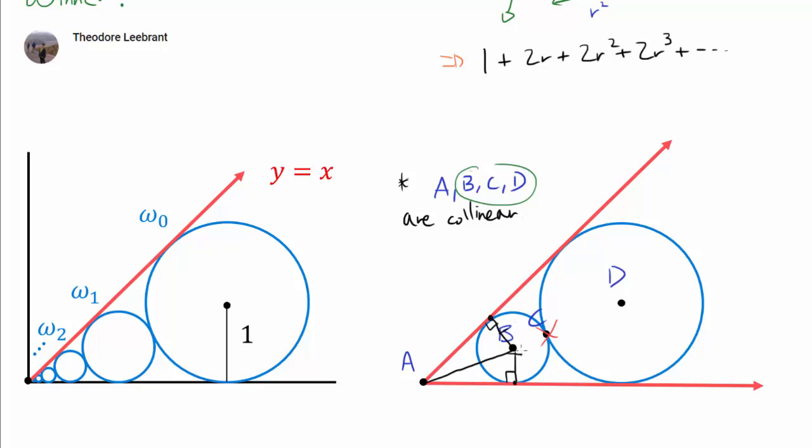We see that by hypotenuse leg, we know these two triangles are congruent. Consequently, these two angles are the same. So AB bisects angle A. Not only that, we can make exactly the same argument with AD.